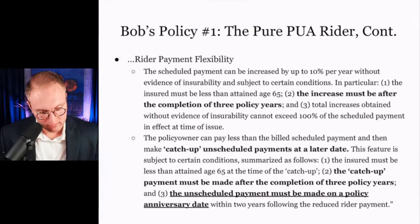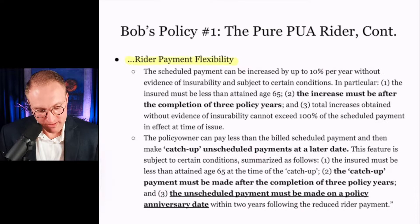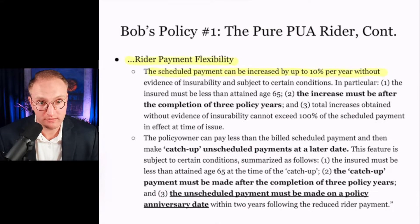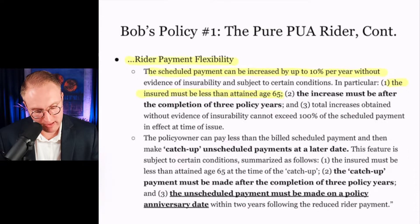To be fair, let's talk about the flexibility that is included on this rider. You can make some scheduled payment increases, but only by up to 10% of the amount, so long as Bob is under the age of 65 — and no increases whatsoever without evidence of insurability in the first three years.